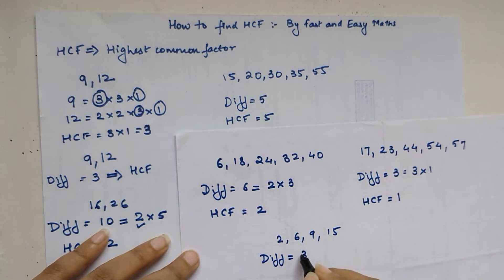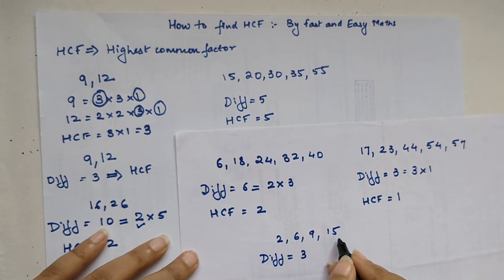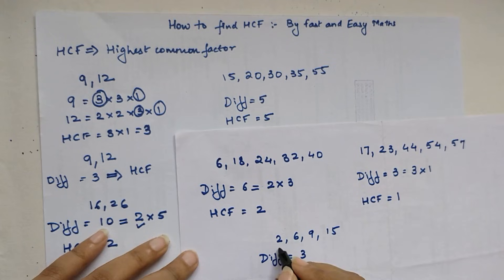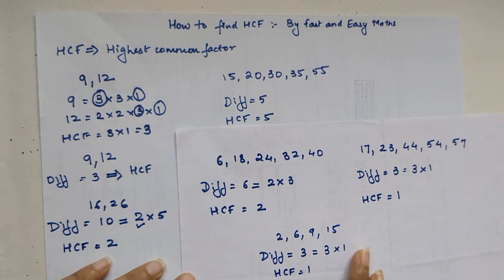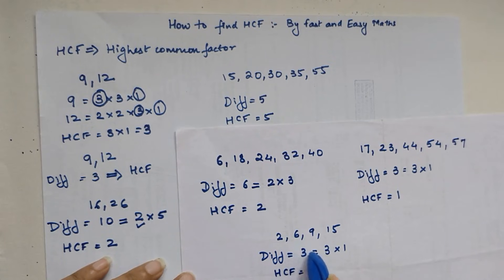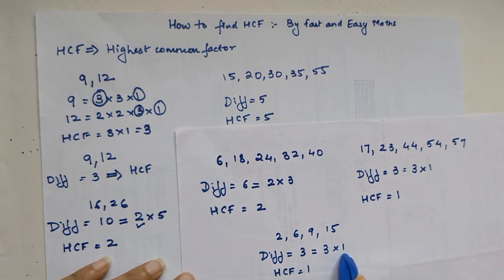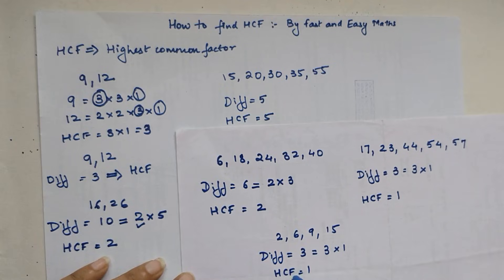Is 3 a factor of all these numbers? It is a factor of 6, 9, and 15, but is it a factor of 2? No. Since it is not a factor of 2, we break down 3 into its prime factors, and again my HCF becomes 1. This example shows that even if just one of the given numbers is not divisible by the difference, we must break it down into prime factors to find the correct HCF.